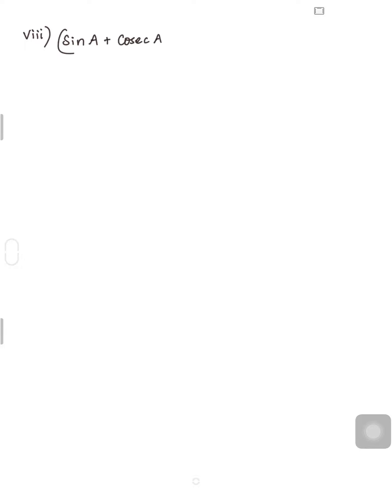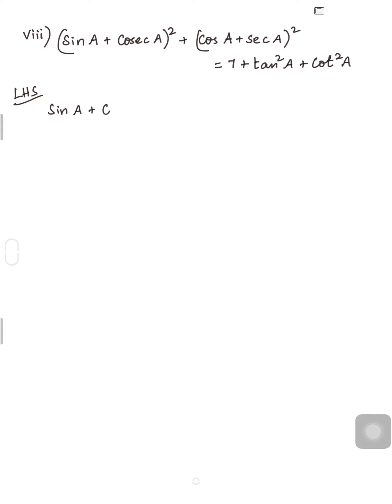Next we move on to the next problem, the 8th sum: (sinA + cosecA)² + (cosA + secA)² = 7 + tan²A + cot²A. What is your LHS? (sinA + cosecA)² + (cosA + secA)². It is in the form of (A + B)², and (A + B)² = A² + 2AB + B².